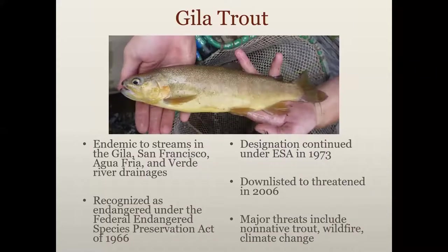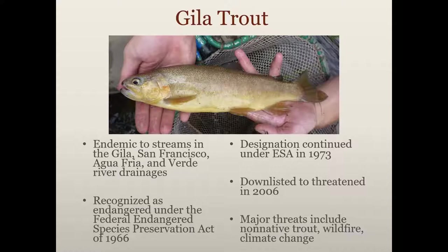Just a little background — if you're not familiar with Gila trout, they are a native trout species endemic to streams in the Gila, San Francisco, Agua Fria, and Verde River drainages. They're only found in New Mexico and Arizona. They were listed as endangered under the precursor to the Endangered Species Act, and that designation transferred when ESA was passed in 1973. As a result of conservation and recovery efforts, they were downlisted to threatened in 2006. Major threats now include non-native trout — hybridization with rainbow trout, and predation and competition with rainbow, brown, and brook trout — as well as wildfire and climate change.